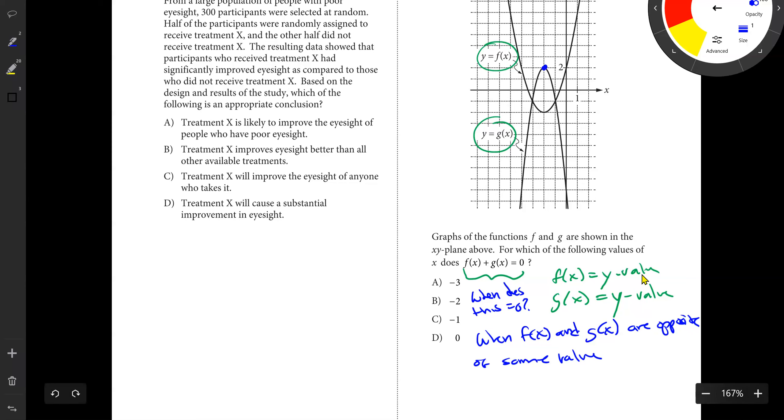If you look at your graph right here, G of negative 2 equals 2, and F of negative 2 equals negative 2. So you see how if I add those, 2 plus negative 2, F of negative 2 plus G of negative 2 is going to be negative 2 plus 2, which is zero. That works out.